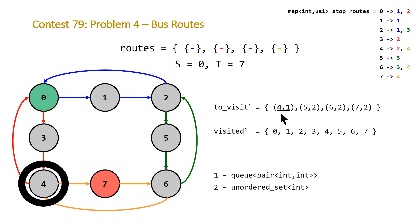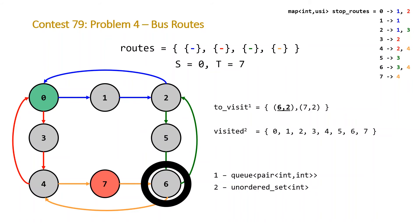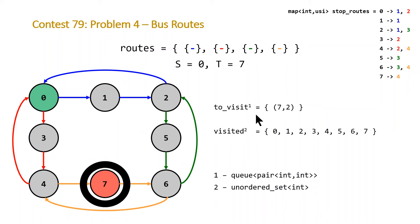We continue popping pairs off the queue. When we add a stop for a new bus, we always add plus one to the previous number of buses. This works because when we process a bus we add all of its stops and then clear it, so any new stop added later must be from a new bus. We pop stops 4, 5, 6, and then finally reach stop 7 — our target stop — and return the second of our pair as the answer.